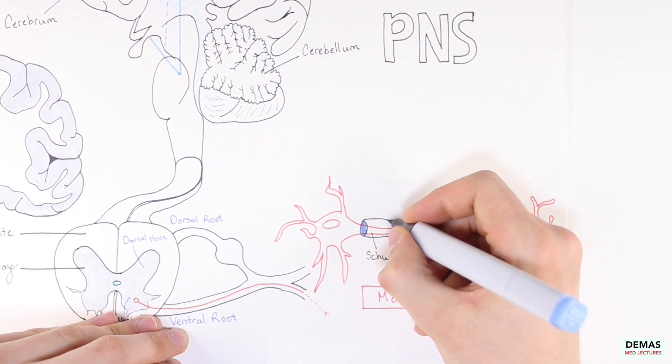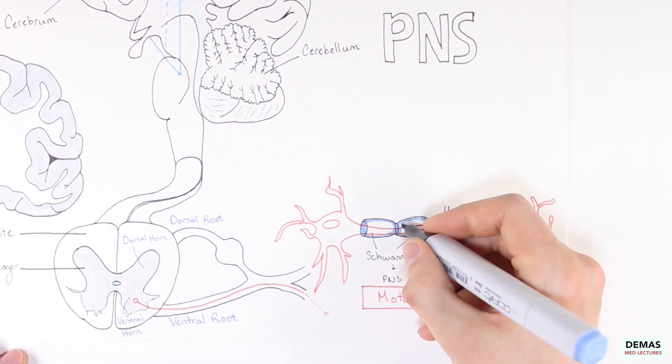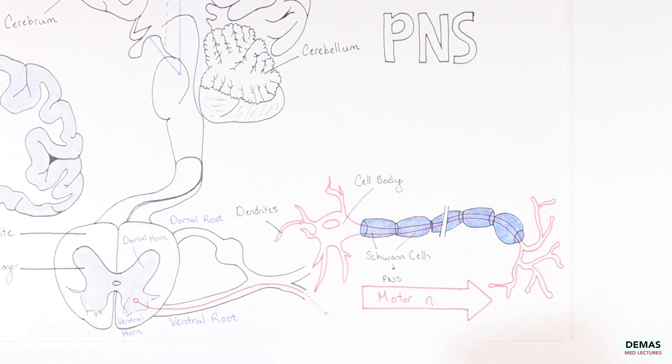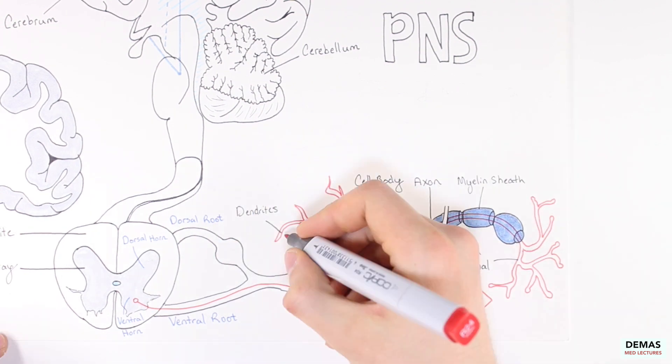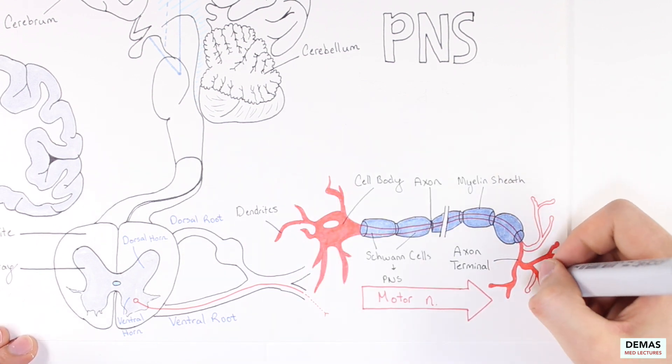This myelin, however, is different since it's generated and maintained by Schwann cells. Now what I'm going to go ahead and do is label the important structures that you should be familiar with in the motor neuron, including the dendrites, the cell body, the axon, and the myelin sheath.